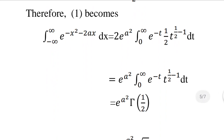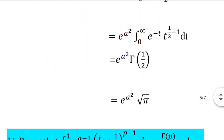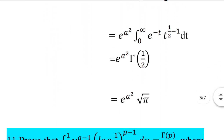After substitution, we get e raised to a squared times 2 times 1 by 2 times the integral from 0 to infinity of e raised to minus t times t raised to 1 by 2 minus 1 dt. This equals e raised to a squared times gamma 1 by 2. Since gamma 1 by 2 is the standard result equal to root pi, the answer is e raised to a squared times root pi.